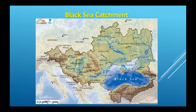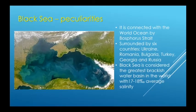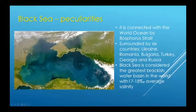The Black Sea drainage basin covers almost a third of Europe. The largest river is the Danube, flowing through 10 European countries. The Black Sea is connected with the World Ocean by the Bosphorus Strait and is surrounded by six countries: Ukraine, Romania, Bulgaria, Turkey, Georgia, and Russia.